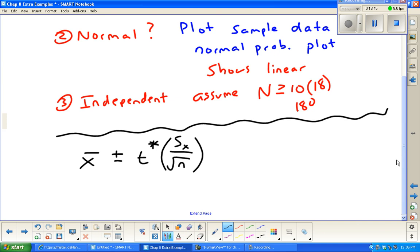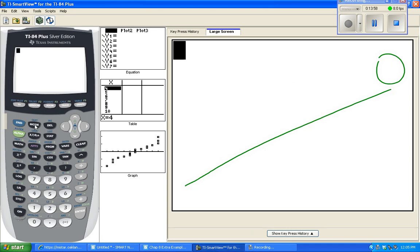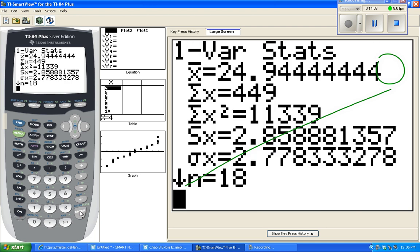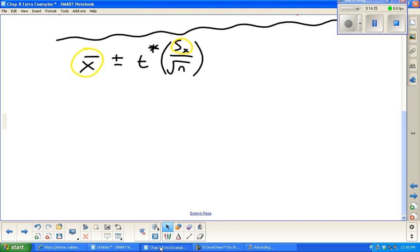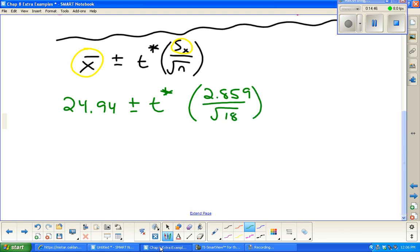Our estimate, we're going to do plus or minus. We're using a T star because we don't know sigma. We're going to use S sub X over root N as our standard deviation. To get the X bar and the S sub X, those are going to come from one variable stats. We have the values in the list already. We're going to go back to stat, calculate one variable stats of list one. And we're going to get our sample mean X bar and our S sub X. So 24.94 and we will use the 2.859 for standard deviation. We have the sample mean, our point estimate. 24.94 plus or minus.